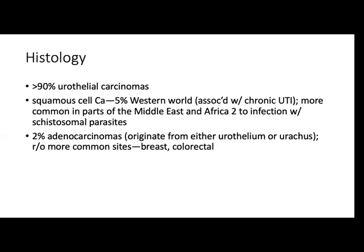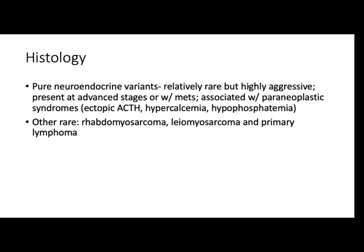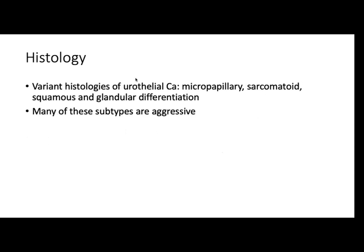Histology: more than 90% are urothelial carcinomas — previously called transitional carcinoma. Squamous cell carcinoma accounts for 5% in the western world, associated with chronic UTI; more common in parts of the Middle East and Africa due to schistosomal parasite infection. Adenocarcinoma is 2%, originating from the urothelium or urachus. There are also neuroendocrine variants, and rare types such as rhabdomyosarcoma, leiomyosarcoma, and primary lymphoma. Urothelial subtypes include micropapillary, sarcomatoid, squamous, and glandular differentiation — most subtypes are aggressive.